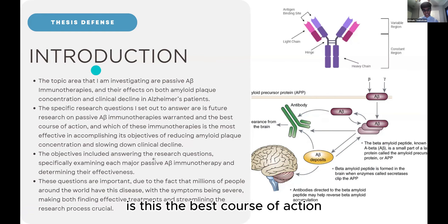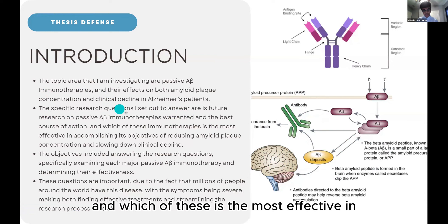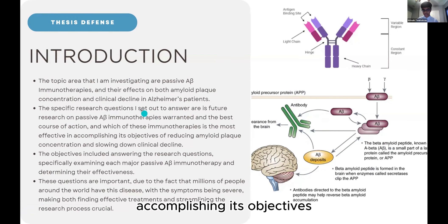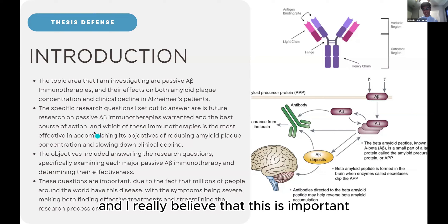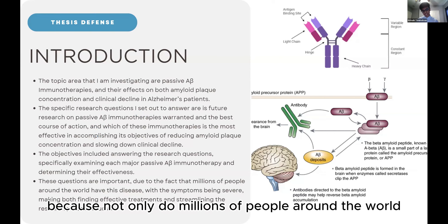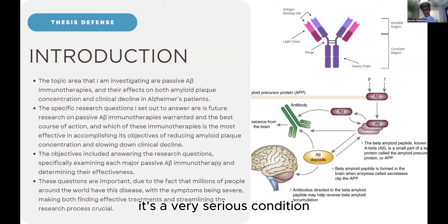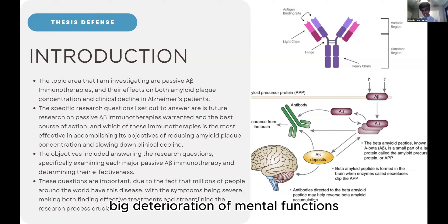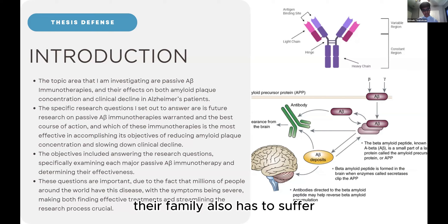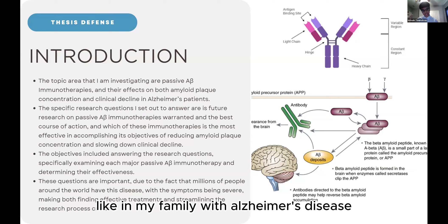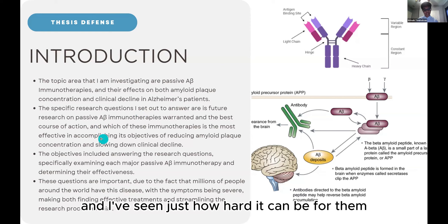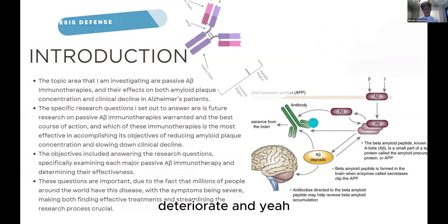The specific research questions I set up are: is this the best course of action, and which immunotherapy is the most effective? This is important because millions of people around the world have Alzheimer's disease — a serious condition causing major deterioration of mental functions. It's a strain not only on the patient but also on their family.